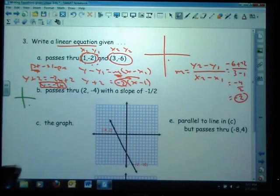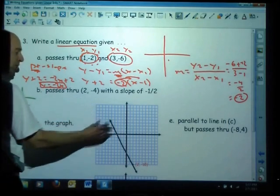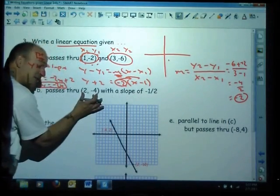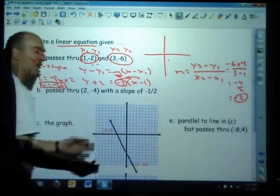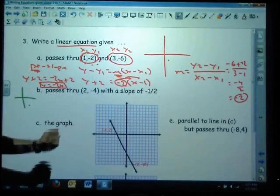2 negative 4 resides down there in quadrant number 4, it's not on the y-axis. So I can't go y equals mx plus b because this is not a y-intercept. I've got to realize this is a point, this is the slope. Point slope form.